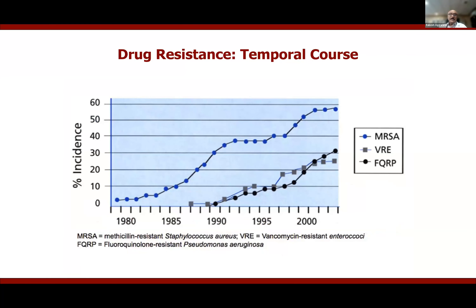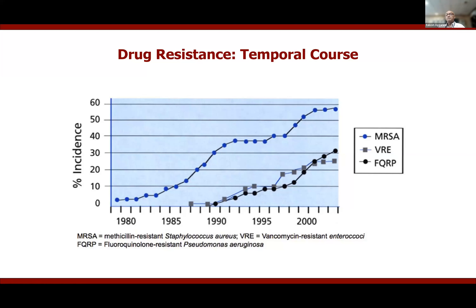When a particular antibiotic is introduced in a population, resistance is either absent or very infrequent. However, as the antibiotic is used, the frequency of resistant strains increases. When methicillin was introduced in the 1980s, there was very little resistance among Staphylococcus aureus, but over the next 20–25 years, a large majority of isolates became resistant. Similarly, resistance has emerged against vancomycin and fluoroquinolones.